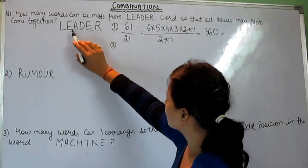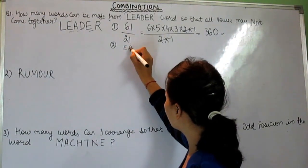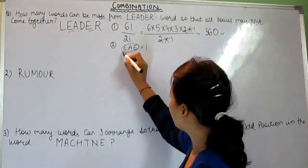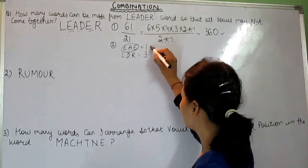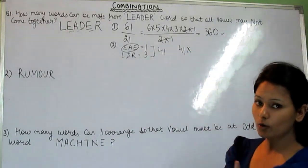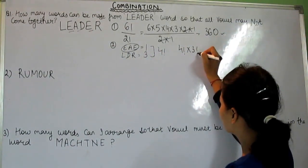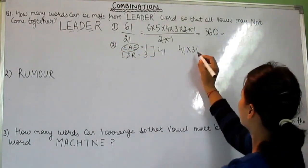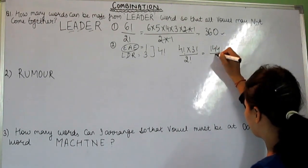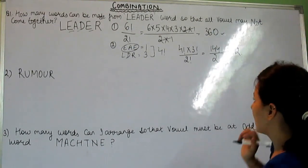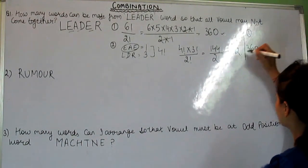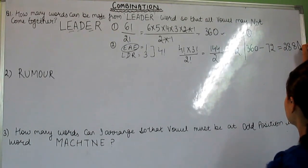Next step: take the vowels together. The vowels in LEADER are E, A, E — treating them as one group, with consonants L, D, R remaining. We have 4 total units and the vowel group internally has 3 factorial arrangements. So 4 factorial into 3 factorial equals 24 into 6, which gives 144 divided by 2 equals 72. The last step is 360 minus 72, and the answer is 288. This is the final answer.